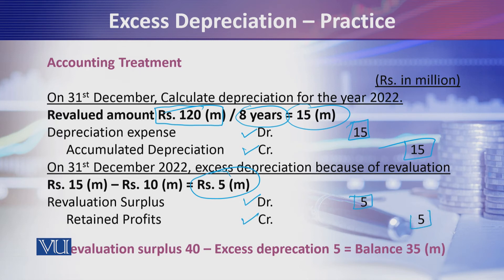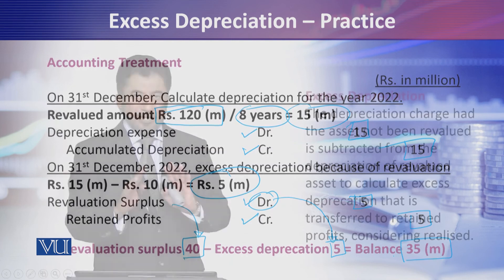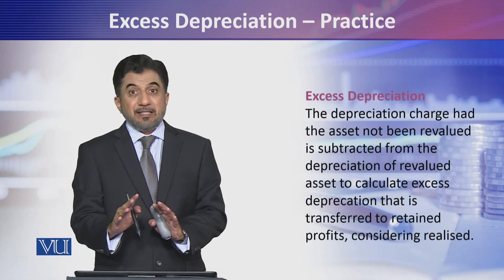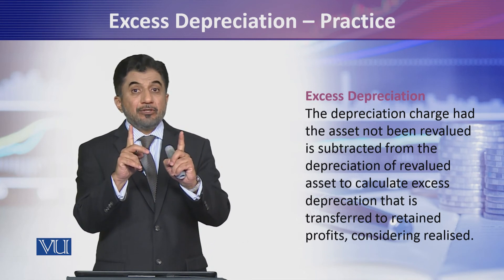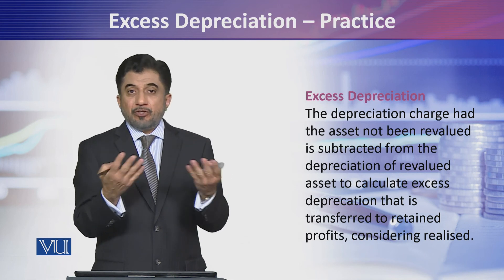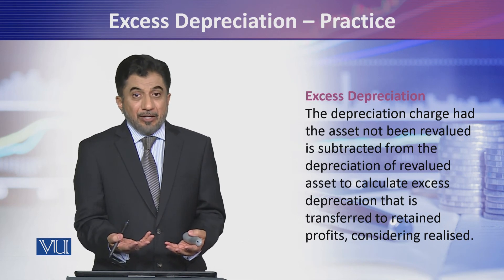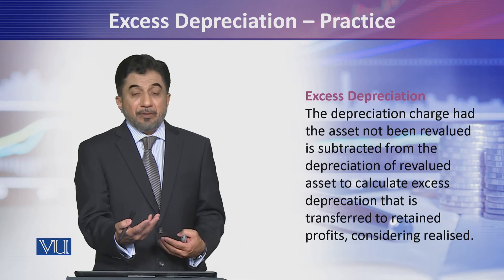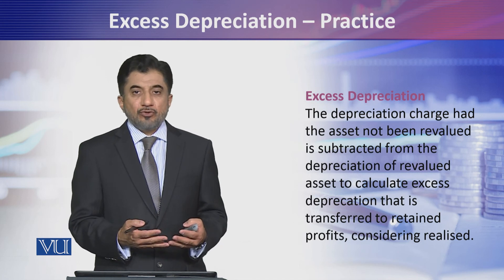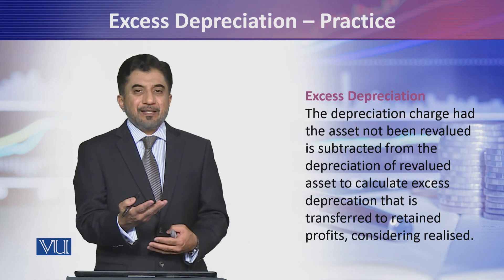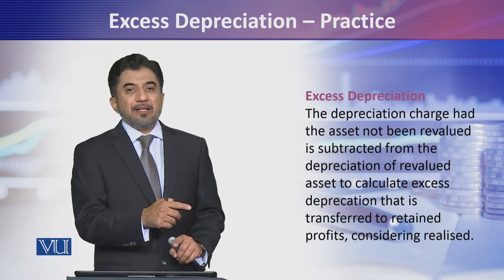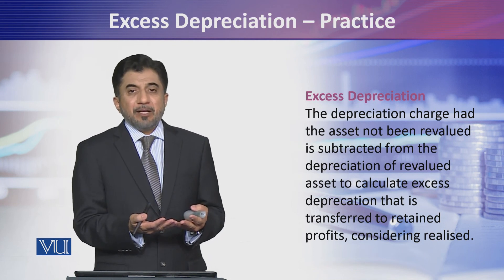The accounting treatment for this 5 million excess depreciation: we debit revaluation surplus and credit retained profits with 5 million. When we do this, the revaluation surplus — which was 40 million — will reduce by 5 million, giving a balance of 35 million. To summarize: had the asset not been revalued, depreciation would be 10 million; since it was revalued, 15 million is charged; the 5 million excess is reversed out of revaluation surplus into retained profits.